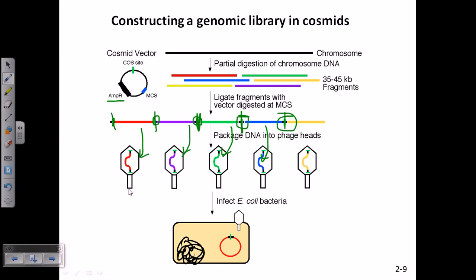Then, we can take this phage and infect bacteria. Here, the bacteria is E. coli. We infect the E. coli cell here. After infecting them, we transform our genetic material inside the cell of the E. coli. So, that is how we can construct a genomic library with cosmids.